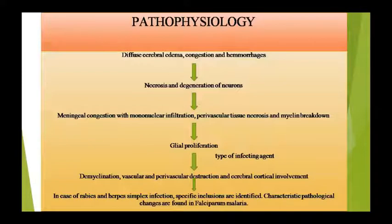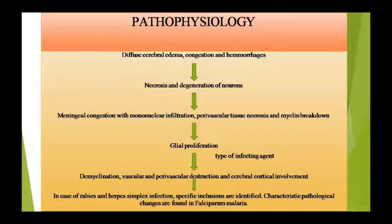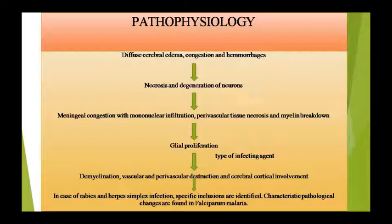Pathophysiology में — cerebra में diffuse edema होगा यानि fluid भरेगा, congestion यानि blood volume बढ़ जाएगा, और hemorrhage यानि blood का leakage होने लगता है। इससे neurons में cell death होने लगेगी, वो degenerate होने लगेंगे। Meninges में congestion होगा, mononuclear cells वहाँ इकट्ठी होंगी, perivascular tissue का necrosis होगा, myelin sheath टूटने लगेगी, और glial proliferation होगी। Demyelination और vascular/perivascular destruction भी देखने को मिलेगा।